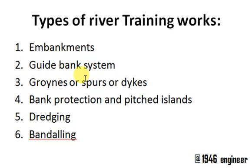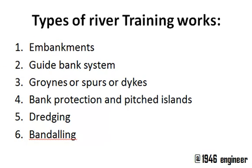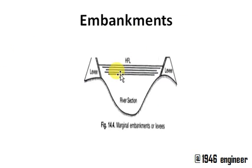I'll give a brief overview of the types of river training works: embankments, guide bank systems, groins or spurs or dikes, bank protection and pitching, dredging, and bandaling. Depending upon the site and conditions, each one is selected. The basic concept is to maintain sufficient depth of water and prevent bed erosion.